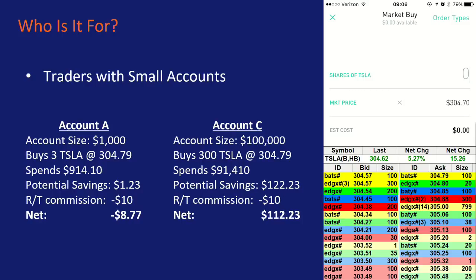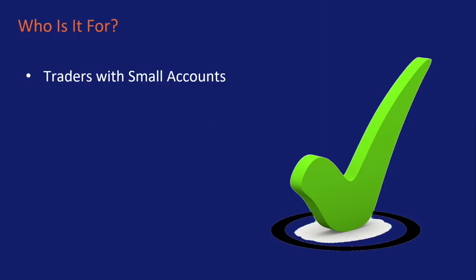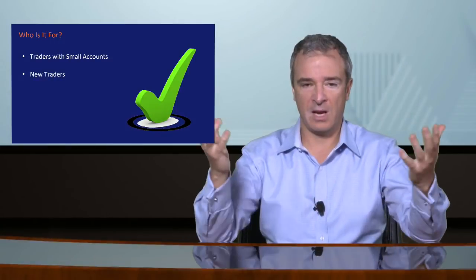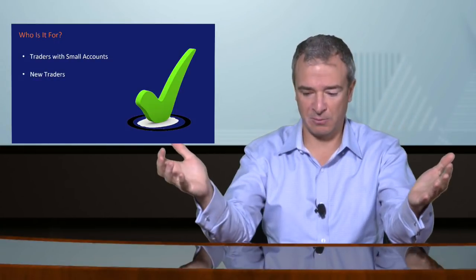What if you're trading 300 shares of Tesla — a $91,000 investment? In that case, you could potentially save $112 by using a directed-order platform. That's why account size matters. For small accounts — a couple hundred or a thousand dollars — Robinhood is great. It's also great for new traders who just want some skin in the game. I'd tell a parent: give your kid $200 and a Robinhood account to learn. If they get interested, then move to a real platform with technical analysis, supply and demand methodology, and the tools to actually make a living as a trader.